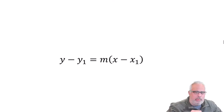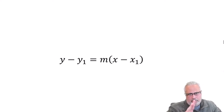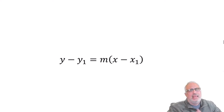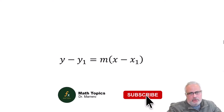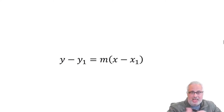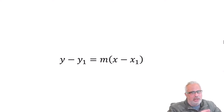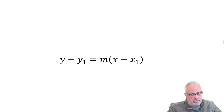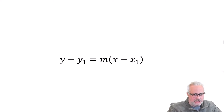Point-slope form: y minus y1 equals m times x minus x1. We have two elements here. The x1 and the y1 are the coordinates of the point, and the slope, which is m. Remember, in the previous videos about slope-intercept form, we were using the point, the slope, and the y-intercept. It's the same idea but with a different structure. So y minus y1 equals m times x minus x1 is another way to write the linear function.